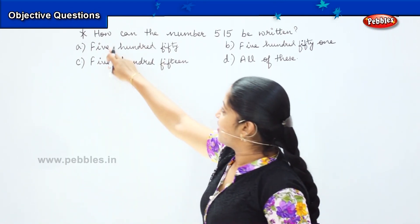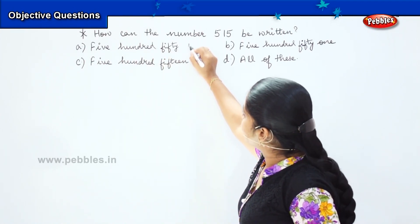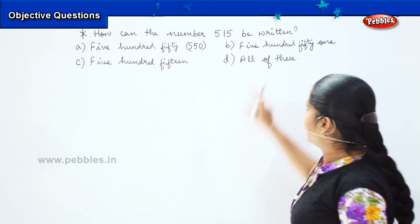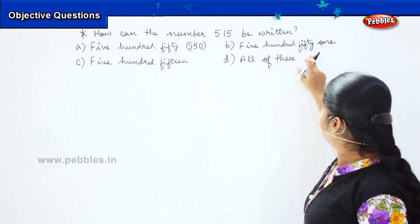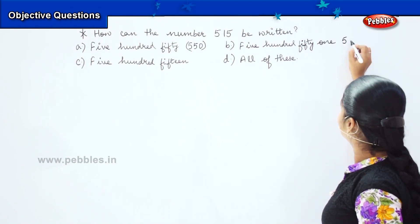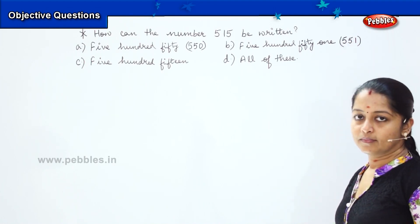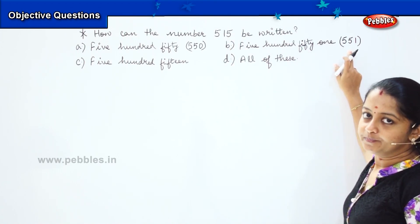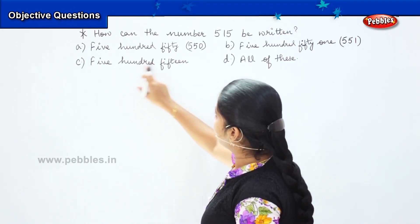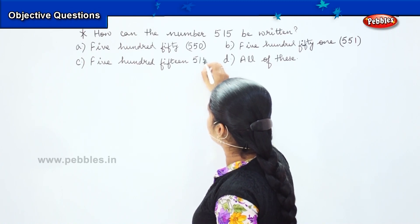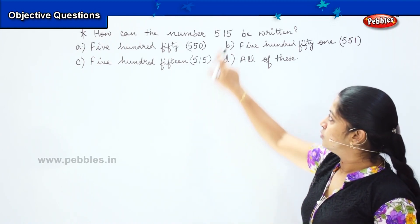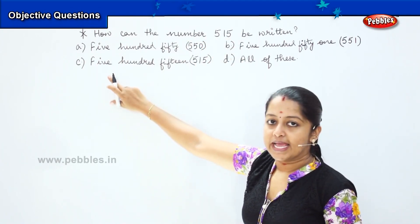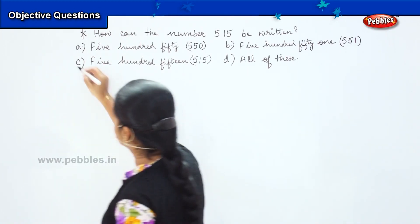Coming to the first option, it says 550. How will you write 550? It's 550, and this does not match with the question being asked. The next one says 551. How will you write it? It's 551. Again, the question given and the answer have no sync. Coming to the third option, it's 515, which is nothing but 515. So is it matching with the question? Yes. So the number 515 can be written as 515. Option C is my right answer.